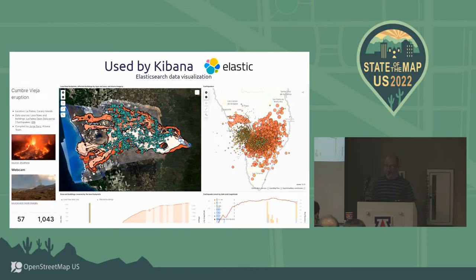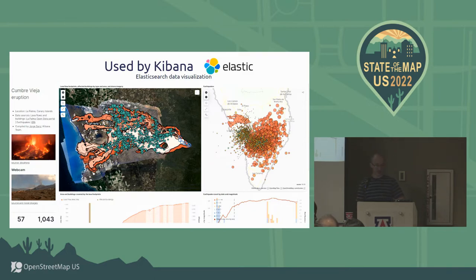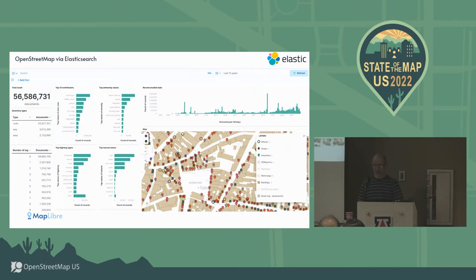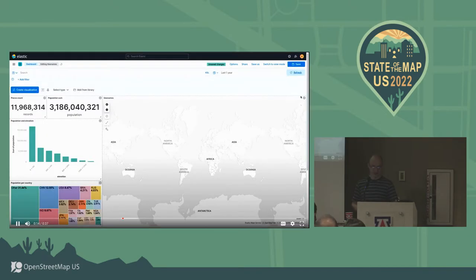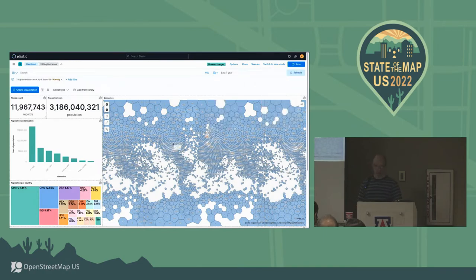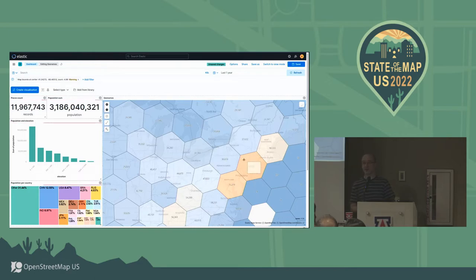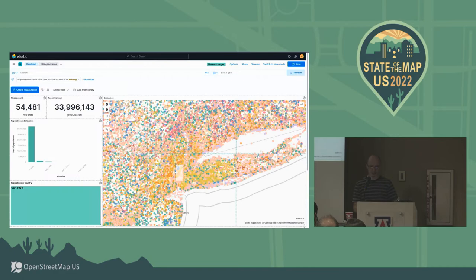Elastic, for which I work, is actively using MapLibre - both of these visualizations are done using MapLibre, and we're currently migrating to version two. One example is the eruption in La Palma - you can use Elasticsearch to analyze all the data related to that eruption and plot it on a map. Another uses OpenStreetMap data injected into Elastic and visualized with MapLibre, including all the buildings. Elasticsearch is also doing things like hex tiles using H3 - originally from Uber - and integrating that in version 8.1.